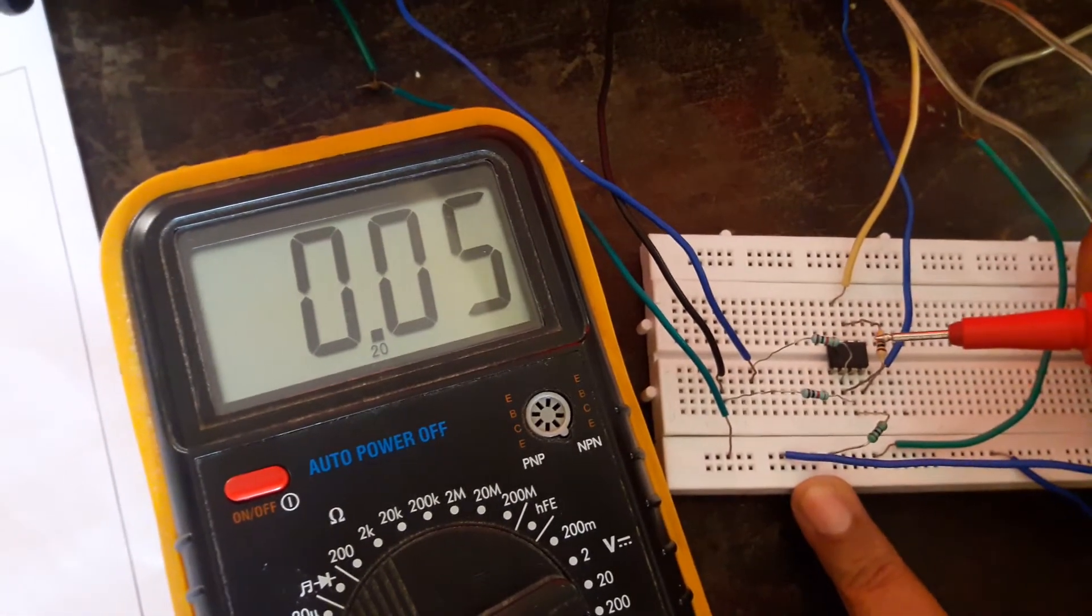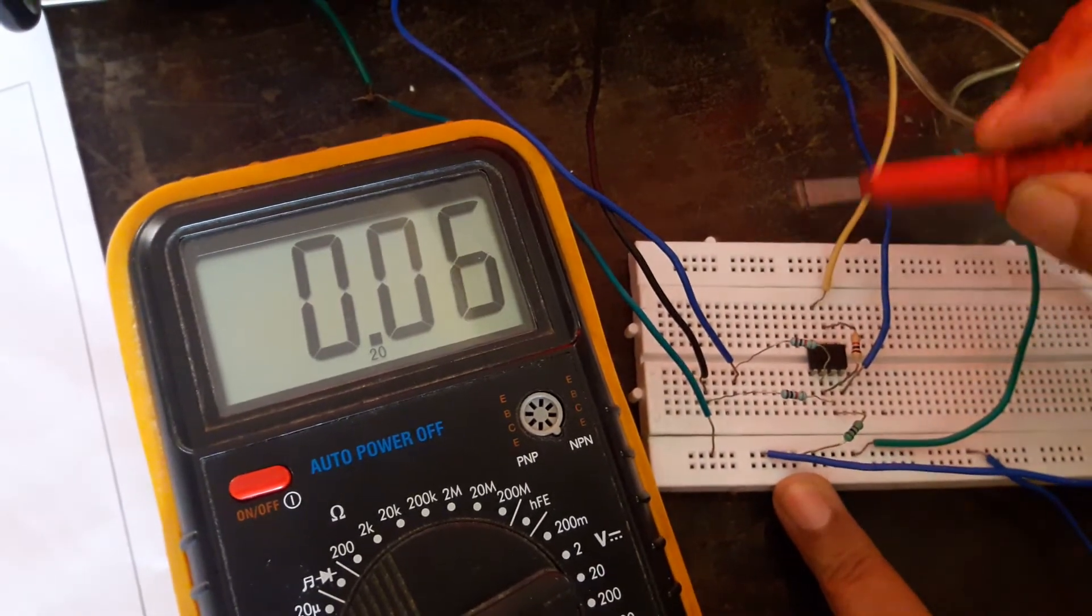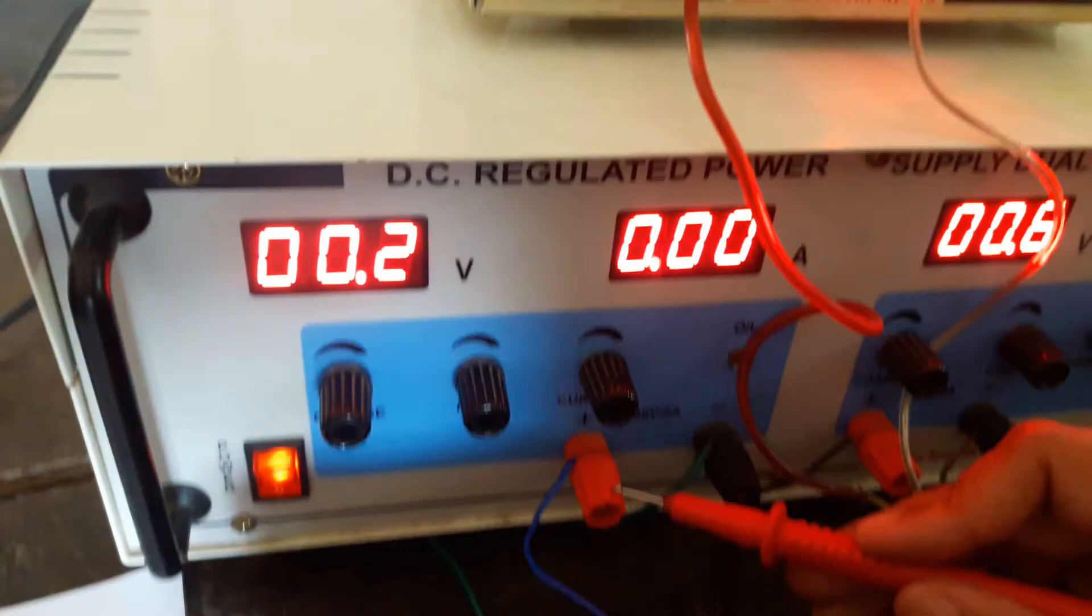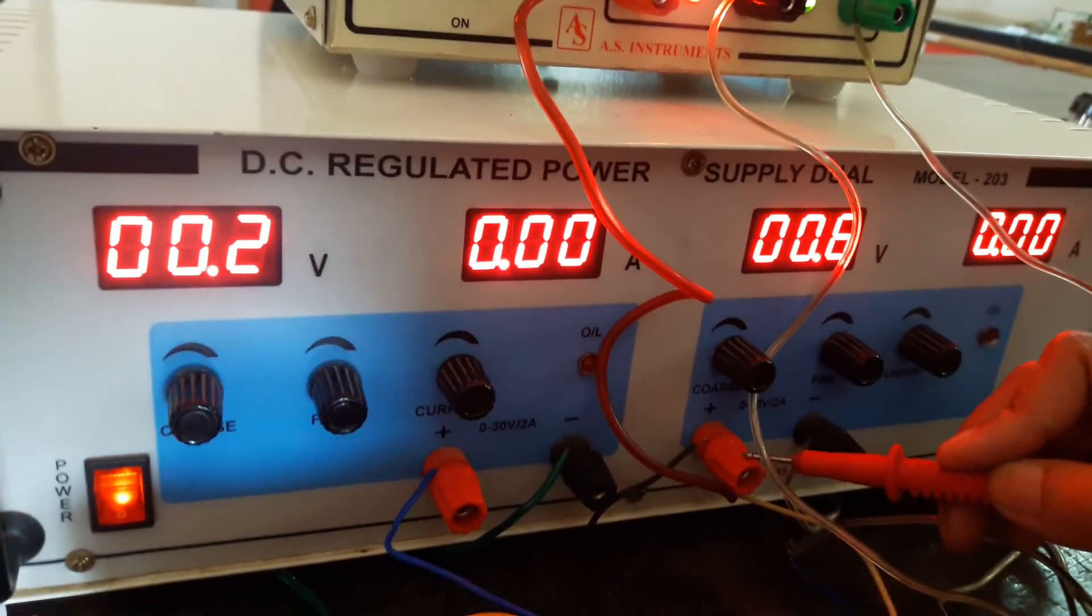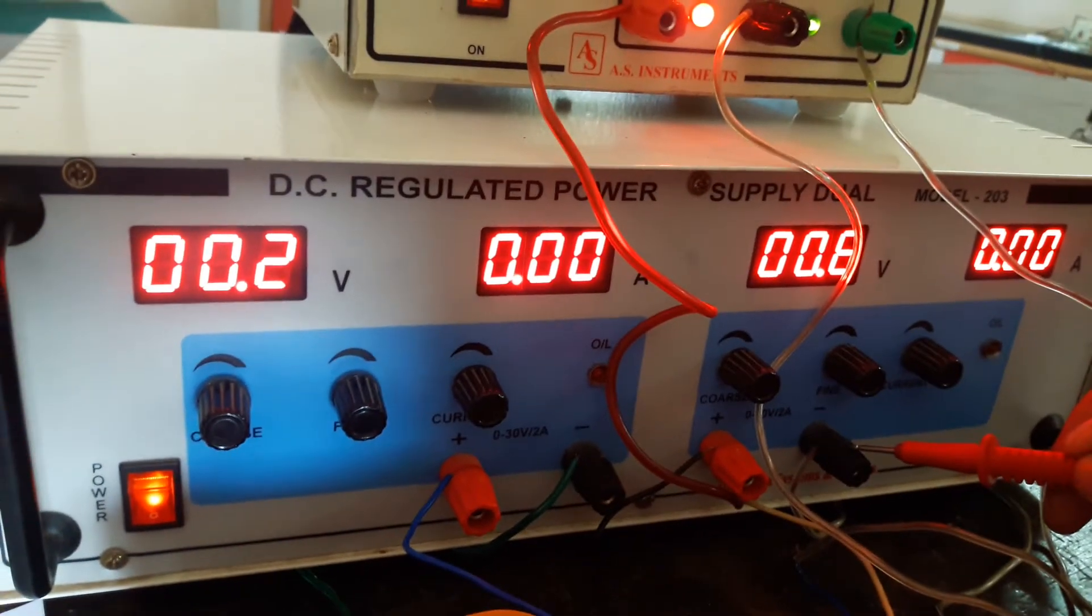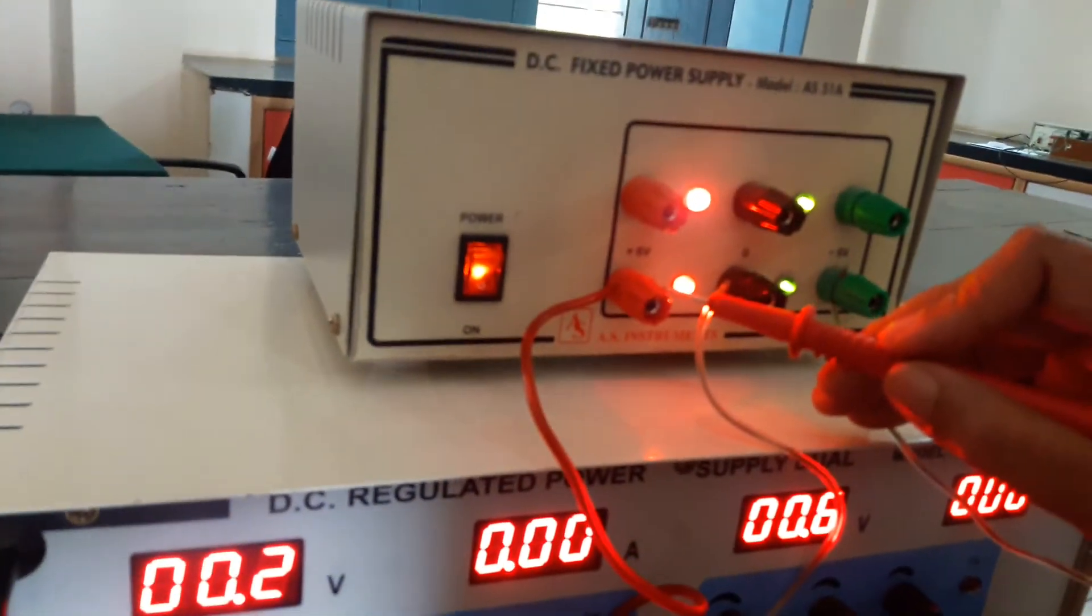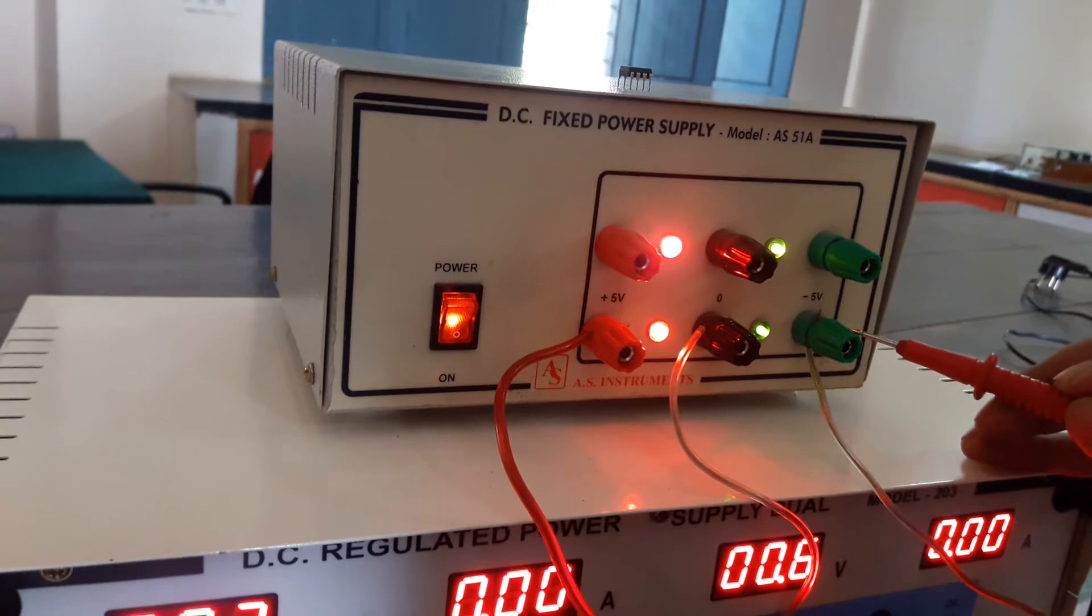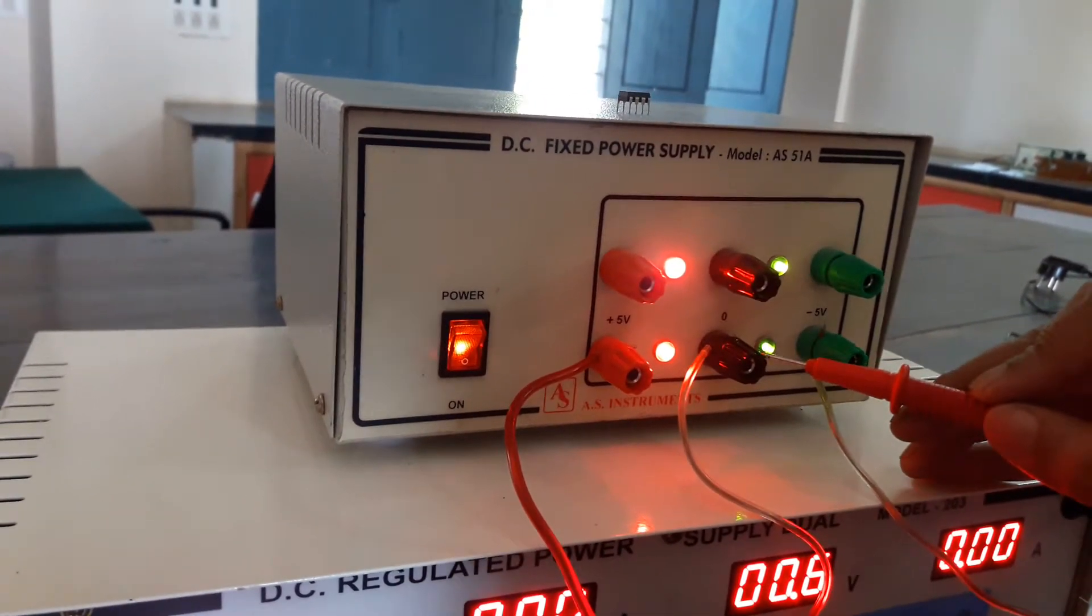From pin 2, feedback resistance is connected to pin number 6. The other end of resistance R1 should be given to V1 and the resistance R2 other end should be given to V2. The negatives of V1 and V2 should be grounded here and the plus 5 volts should be given to pin number 7 and minus 5 volts should be given to pin number 4 and this terminal should be grounded.